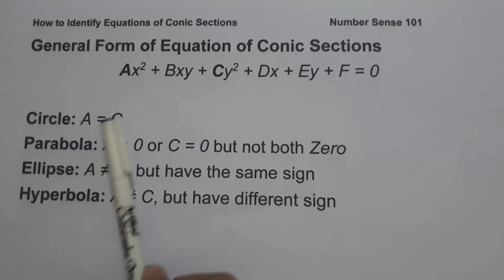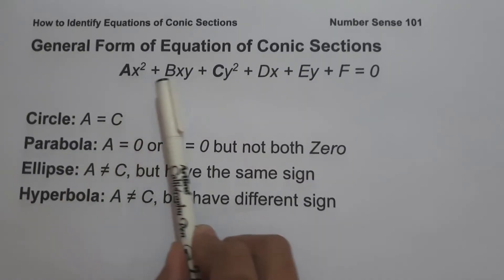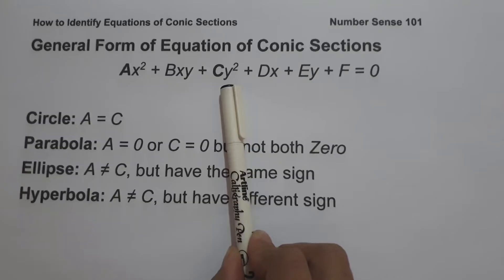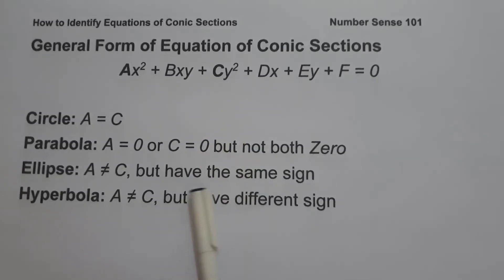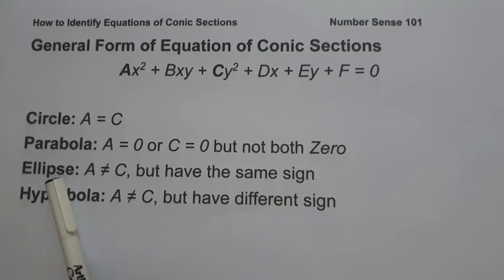And if the coefficient of x² is not equal to the coefficient of y² but they have the same sign, we can say that the given equation is an ellipse.